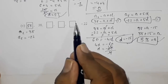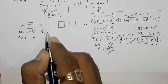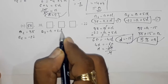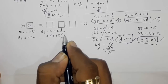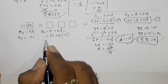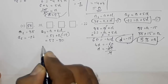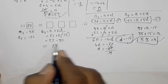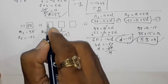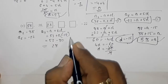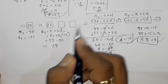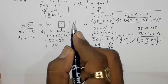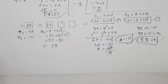Now we find the remaining terms. a3 = a + 2d = 53 + 2 × (−15) = 53 − 30 = 23. Similarly, a4 = a + 3d and a5 = a + 4d, which you can calculate the same way. Thank you so much for watching. If you like the video, please subscribe to my channel.